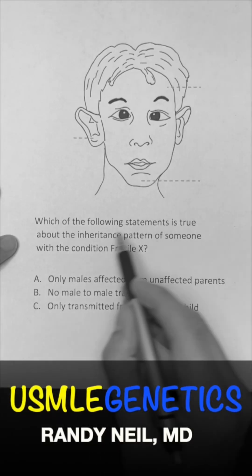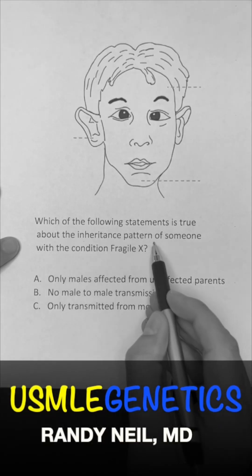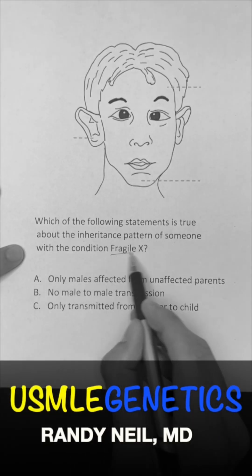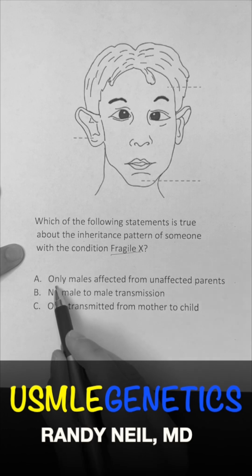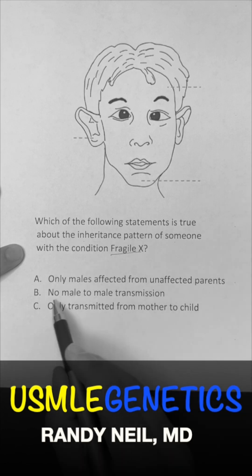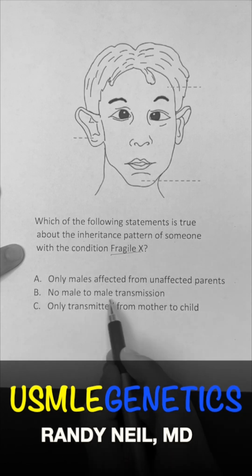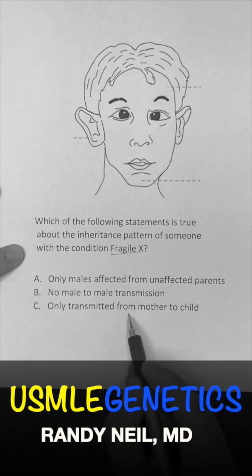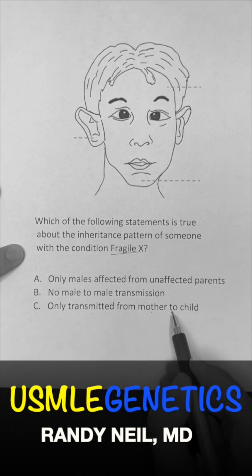Which of the following statements is true about the inheritance pattern of someone with Fragile X? Is it A, only males affected from unaffected parents? Is it B, no male-to-male transmission? Or is it C, only transmitted from mother to child?